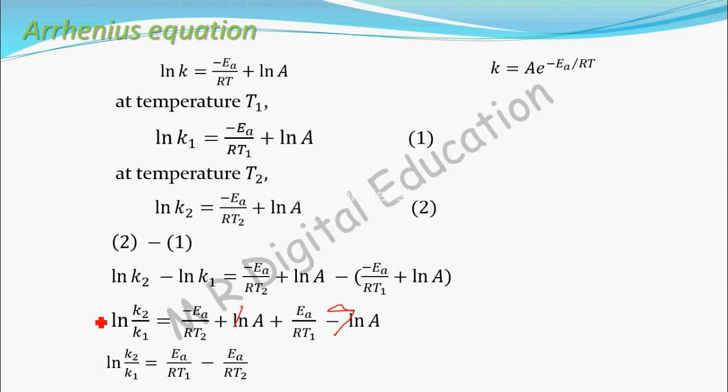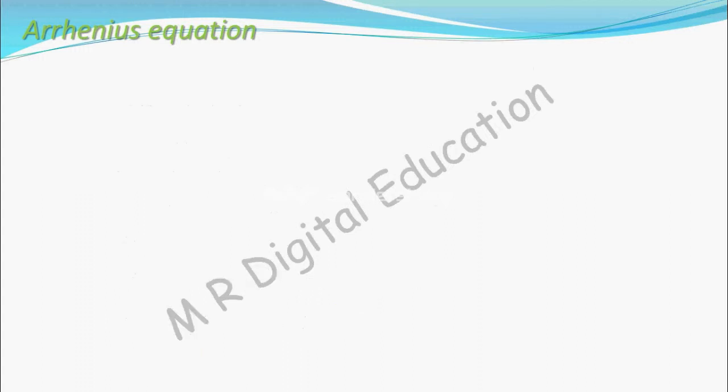What you get now? ln k2 by k1 equal to Ea by RT1, this minus Ea by RT2. Now, what is common here? Ea by R is common. So, take that as common, Ea by R. ln k2 by k1 equal to Ea by R. You have taken common. What is left? 1 by T1 minus 1 by T2.